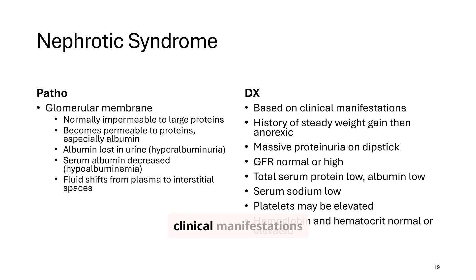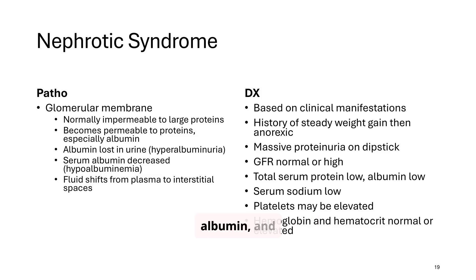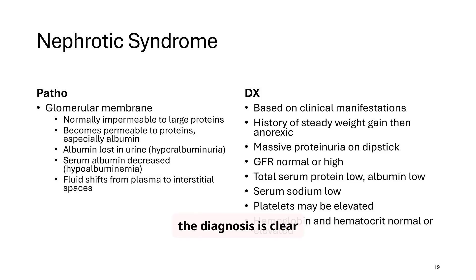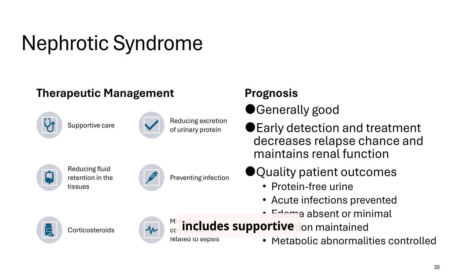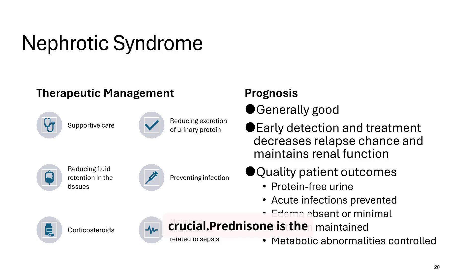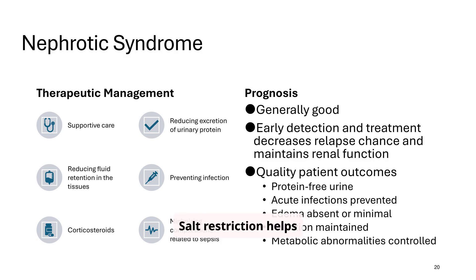Diagnosing nephrotic syndrome relies on clinical manifestations and laboratory findings. Look for massive proteinuria on dipstick — 3-plus or 4-plus protein — low serum albumin, and potentially elevated platelets and cholesterol. These kids often have normal blood pressure unless there's secondary disease involved. Therapeutic management includes supportive care, reducing protein excretion, and preventing infection. Corticosteroids — prednisone is the go-to. Monitor for side effects like weight gain, mood swings, or cushingoid appearance. Salt restriction helps manage swelling. Preventing infection is a major priority in these immunosuppressed kids.